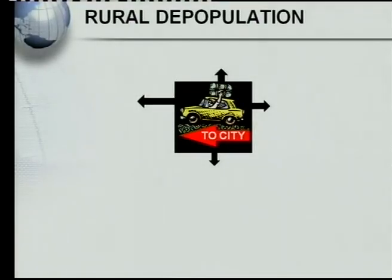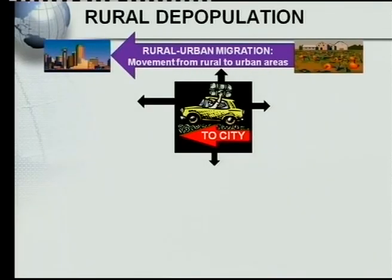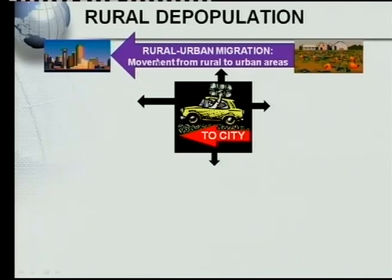Let's have a look at rural depopulation. The first thing that you must know is: what is rural-urban migration? If you look at the graphic here, you see people are moving from the rural areas towards the city. Rural-urban migration is the movement of people from rural to urban areas. People, see that you know how to define rural-urban migration — a very popular concept that they usually ask in the exams.